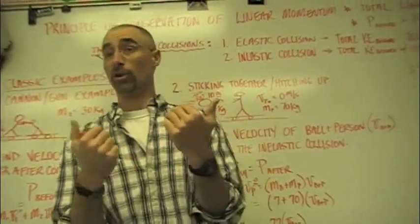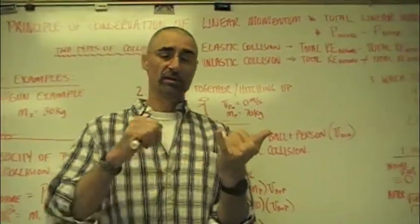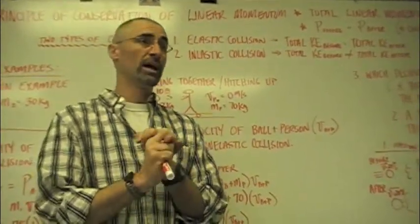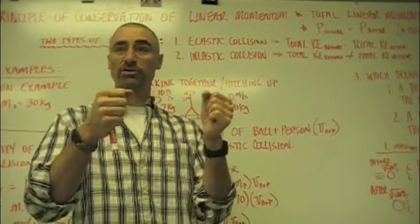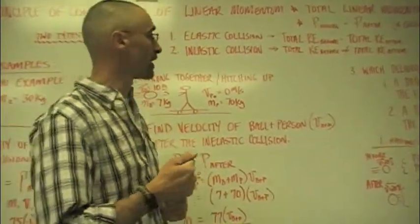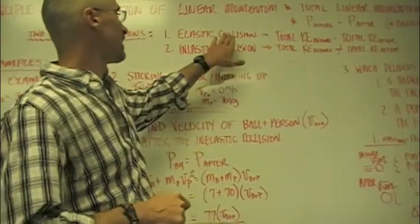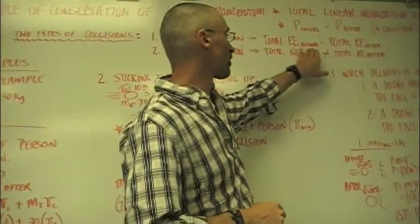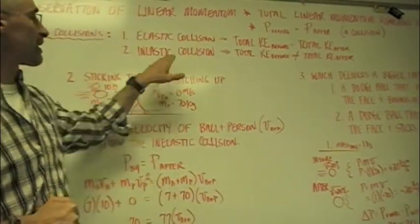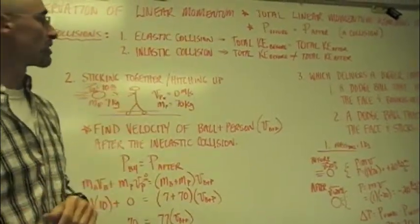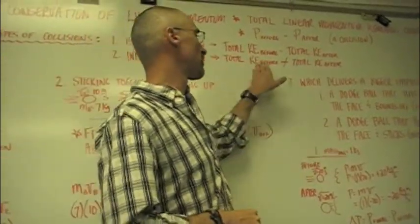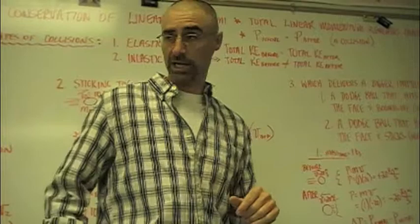The only time we would have an elastic collision is if we say in theory — just like in most of the class so far, we've said there's no friction, no air resistance, we've done everything in a vacuum, massless strings and all those good things to make this conceptually easier. Elastic collision means total kinetic energy before equals total kinetic energy after. Inelastic collision, which is what we mostly have in the real world, means total kinetic energy before does not equal total kinetic energy after.